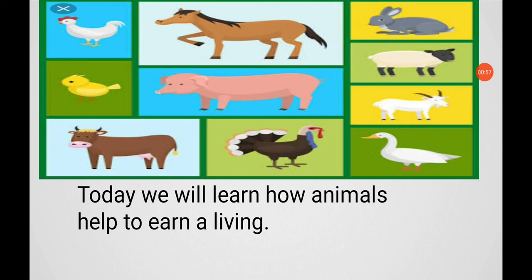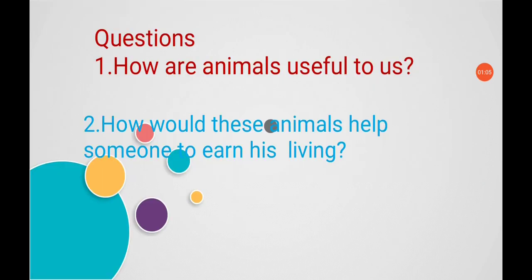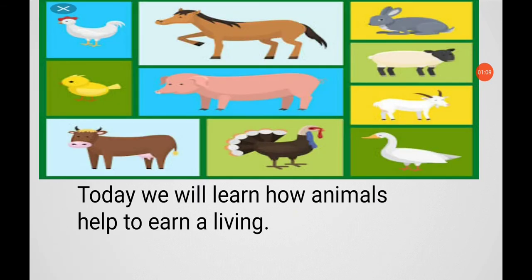In this picture, there are cow, goat, sheep, hen, and duck. These are many types of animals. We see these kinds of animals on a farm.